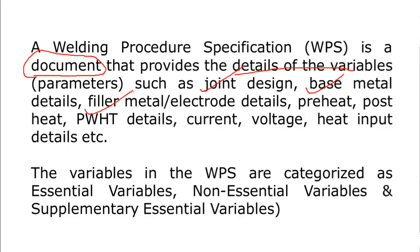Then filler metal details: filler metal name, F number, A number, etc. Then preheat temperature, post-heating, and post-weld heat treatment are mentioned in the WPS. Current range, voltage, and heat input are also listed. These are the variables commonly mentioned in the WPS and frequently asked in interviews.